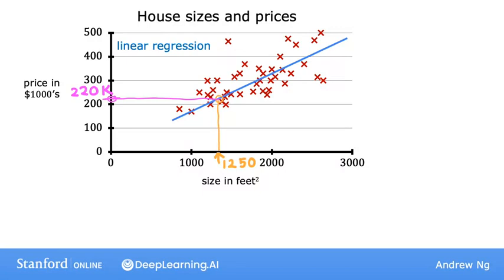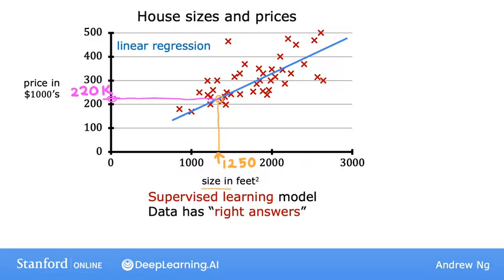So this is an example of what's called supervised learning. We call this supervised learning because you are first training your model by giving your data that has the right answers. You give the model examples of houses with both the size and the price, where the prices are the right answers given for every house in the dataset.